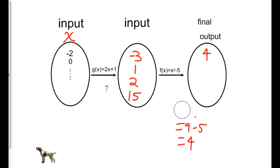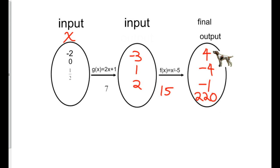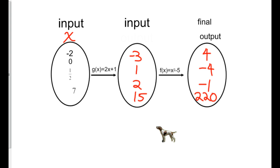Plugging in 1 into this new equation: 1 squared is 1, and 1 minus 5 is negative 4. Plugging in the 2: 2 squared is 4, and 4 minus 5 is negative 1. And then lastly, plugging in 15 squared — 15 squared is 225, and 225 minus 5 is 220. So this final group of values — 4, negative 4, negative 1, and 220 — are all the final outputs from taking the original inputs, applying them to one function, taking those answers, and plugging those answers into a new function. This is what composition is.